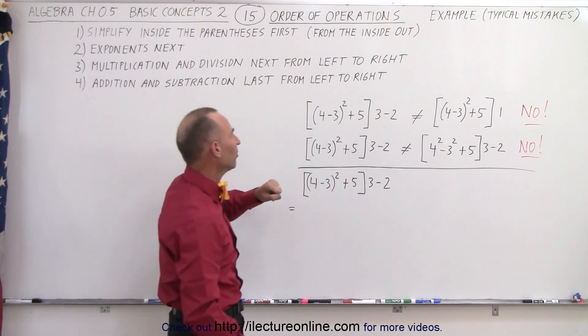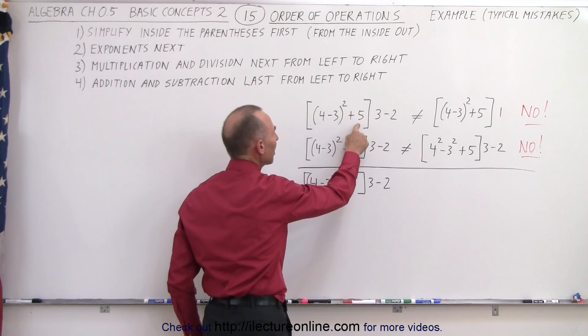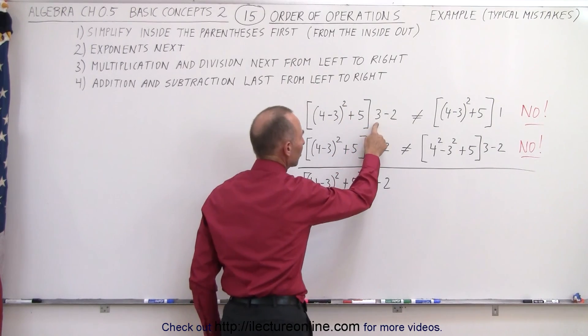So let's say you're given this exercise. In brackets you have the quantity (4-3)² plus 5, then multiply times 3 minus 2.